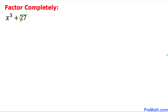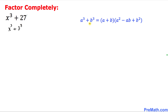As we can see, 27 could be written as 3³. So we can write this as x³ + 3³, and we can see that this is a sum of two cubes. So we will be using the formula: a³ + b³ = (a + b)(a² - ab + b²). Here, x is our a and 3 is our b.